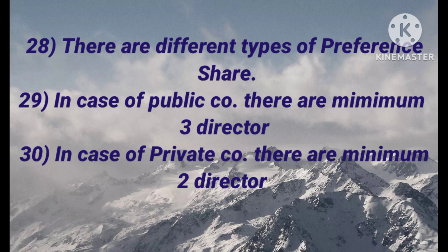There are different types of preference shares — basically 8 types. In the case of a public company, there are a minimum of 3 directors, and in the case of a private company, there should be a minimum of 2 directors.